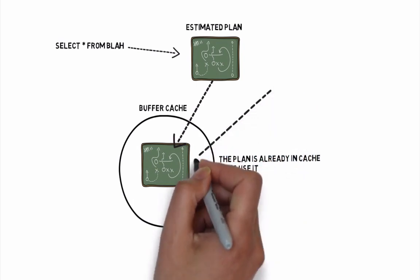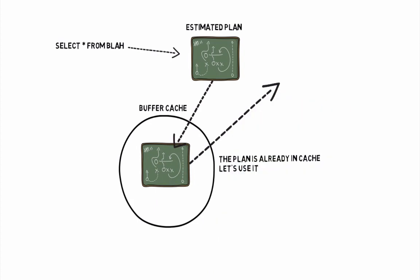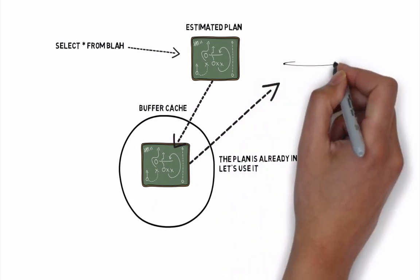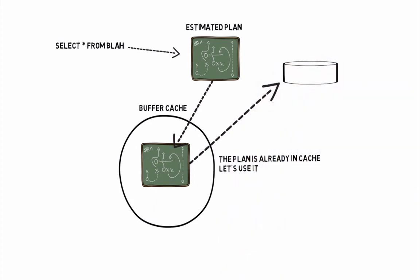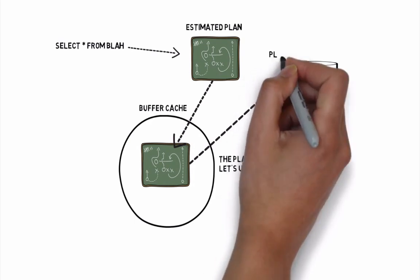Now, execution plans are not kept in memory forever. They are aged out of the system using an aging formula that multiplies the estimated cost of the plan by the number of times it's been used.